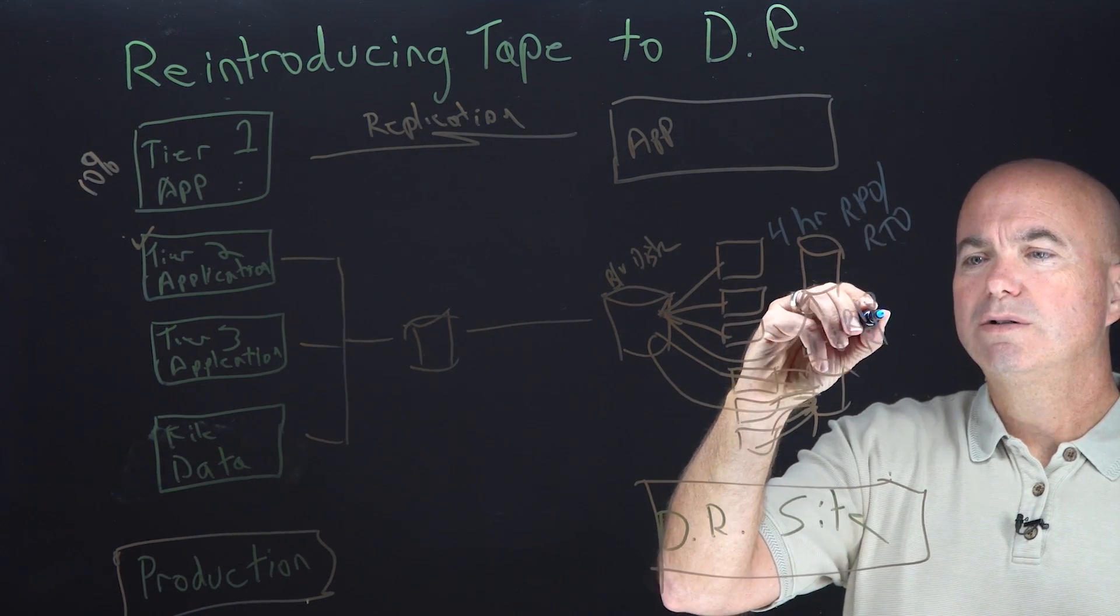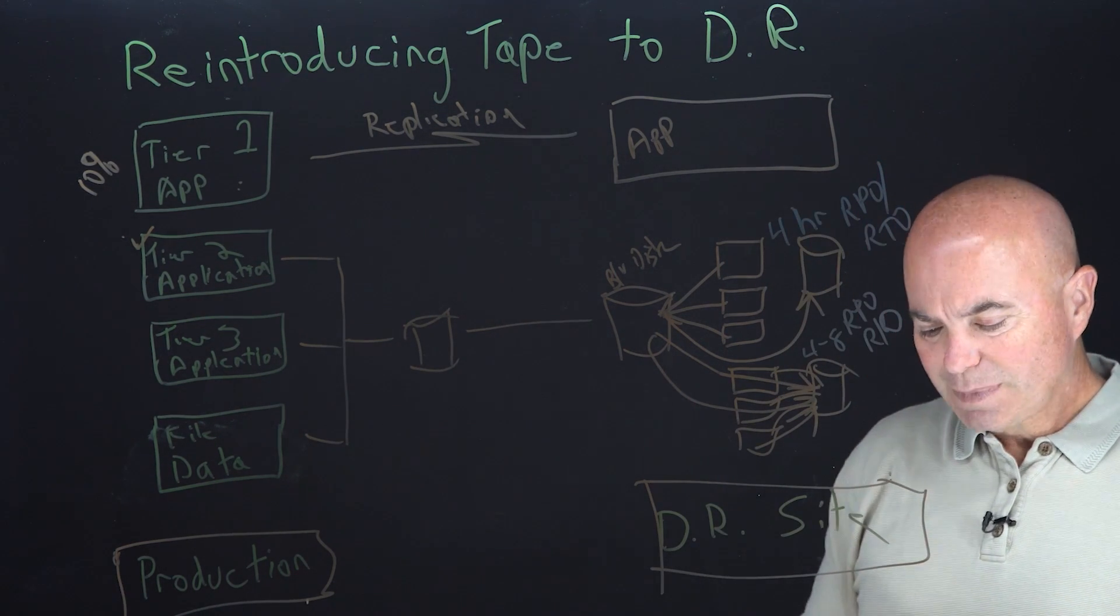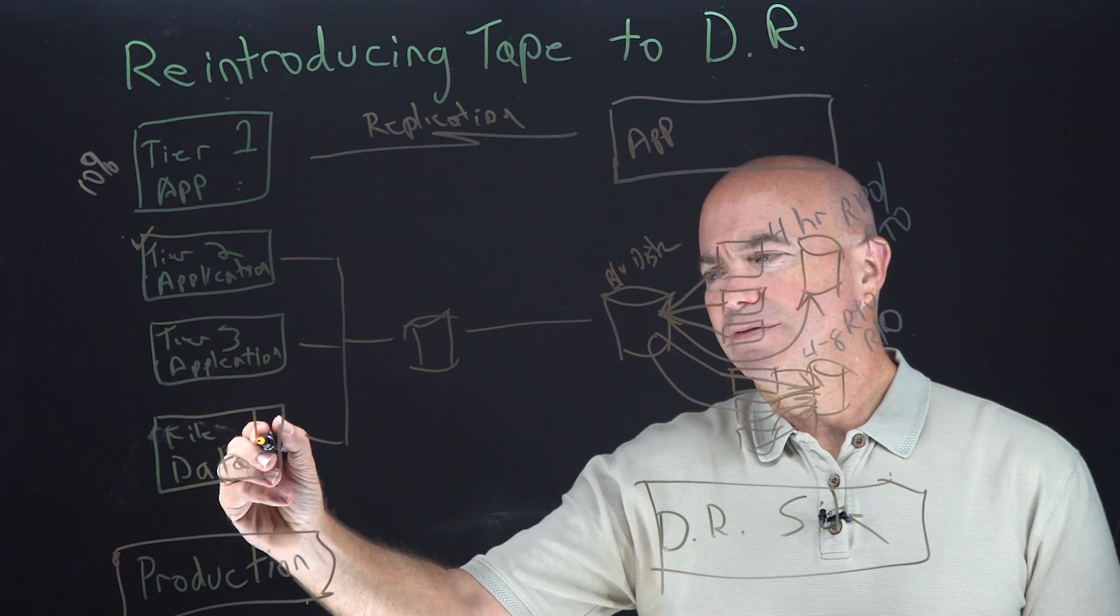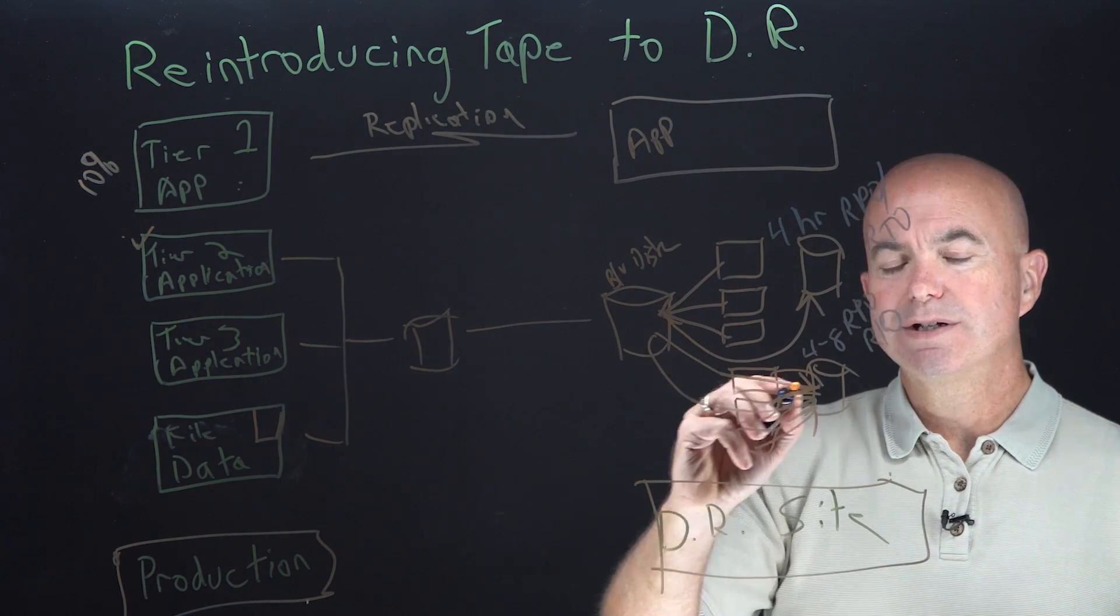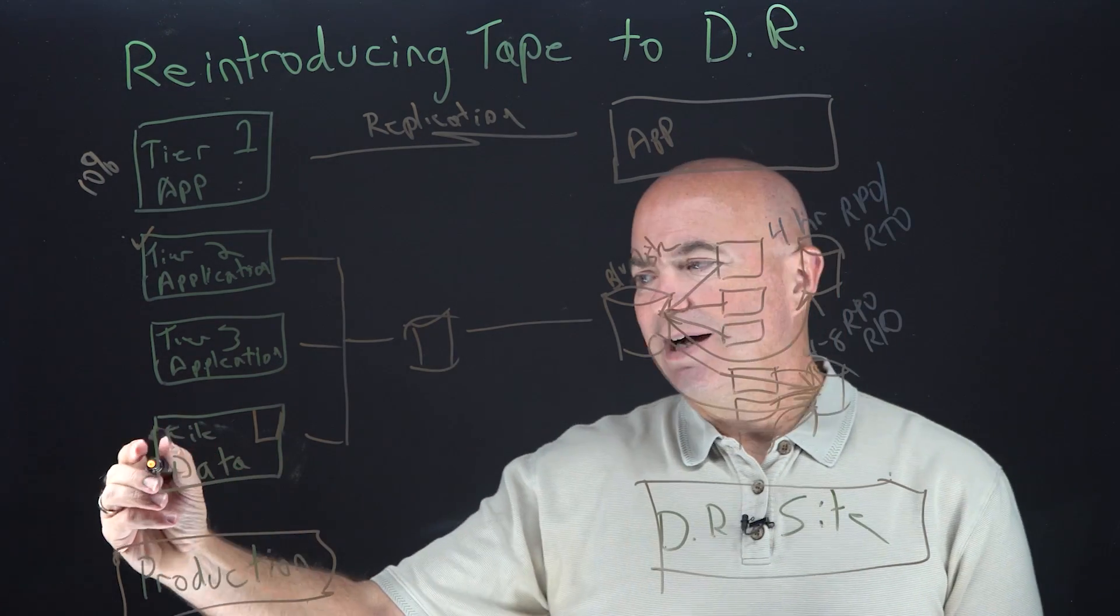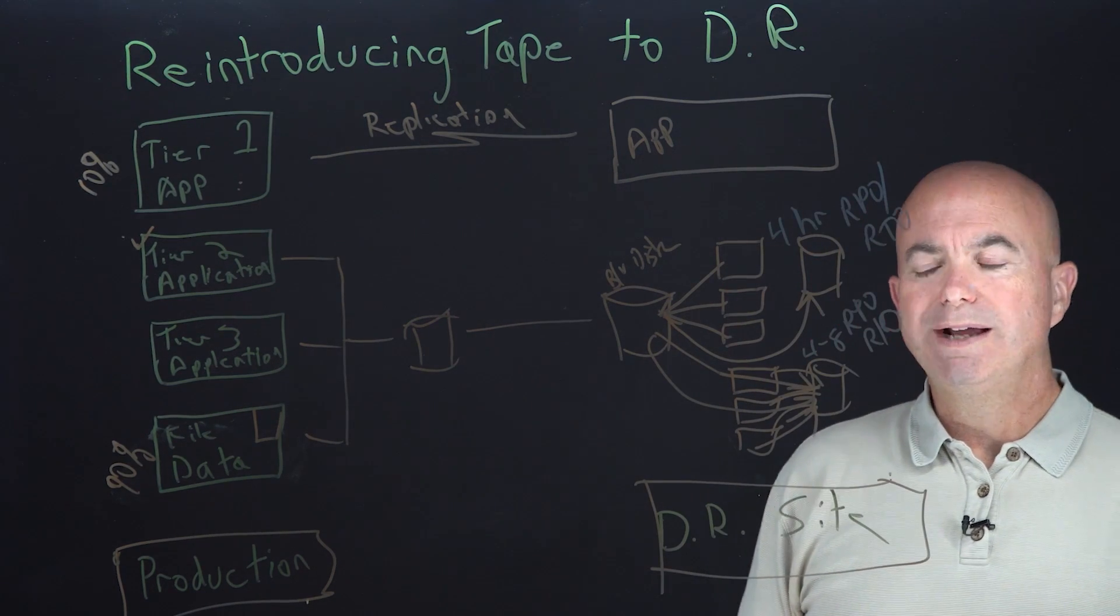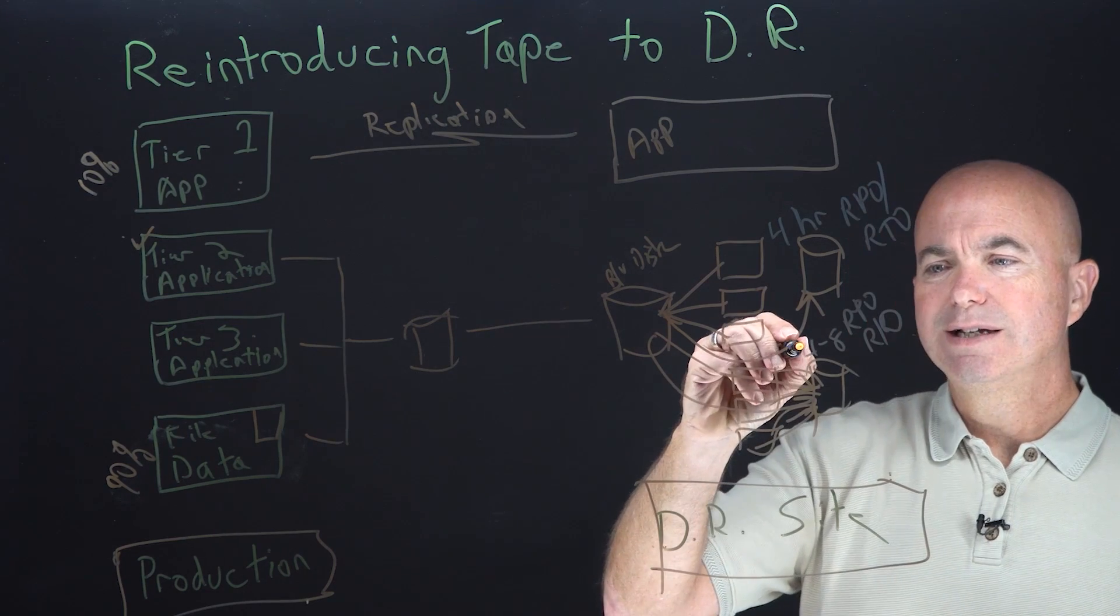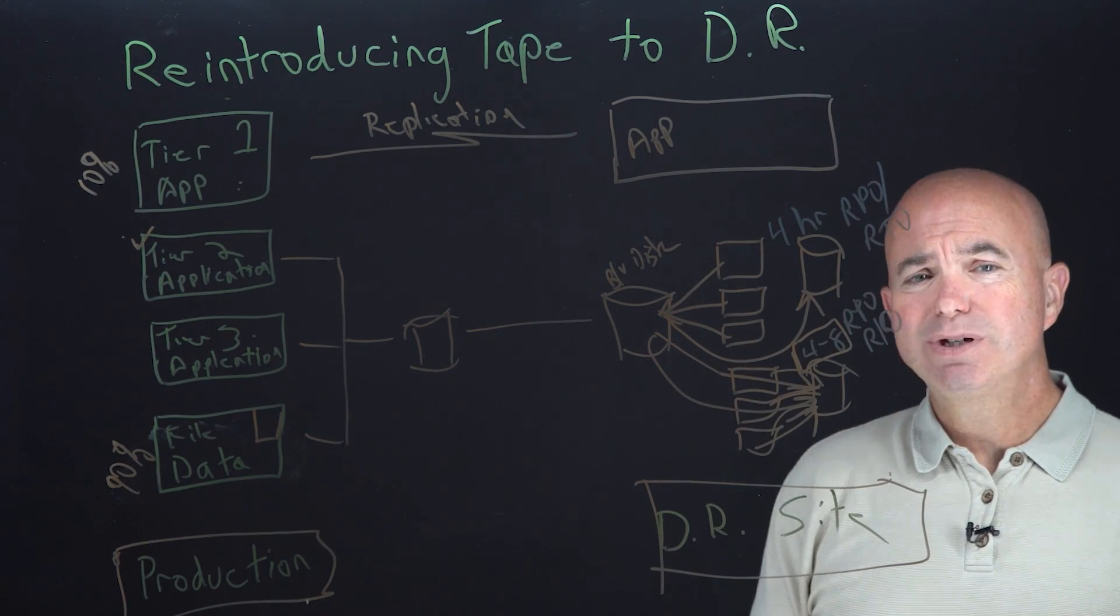Typically a four to eight hour RPO, RTO with the tier three applications. Now in file data, clearly there's a chunk of file data that probably has to come back pretty quickly. And that'll probably happen as part of this tier two recovery, but there's a vast amount of data, probably 90% of it that does not need to be recovered right away. Also if you look at the timeframe on this tier three application set of four to eight hours, that's something that tape could easily meet.